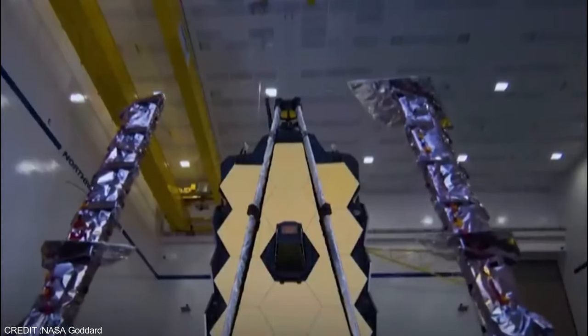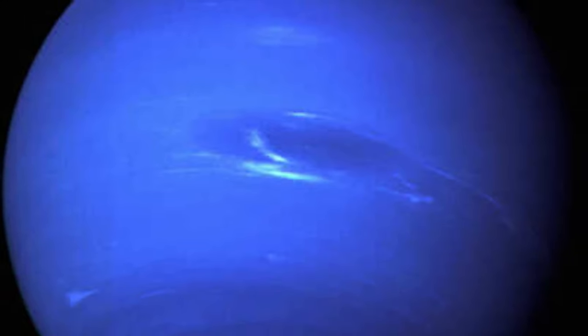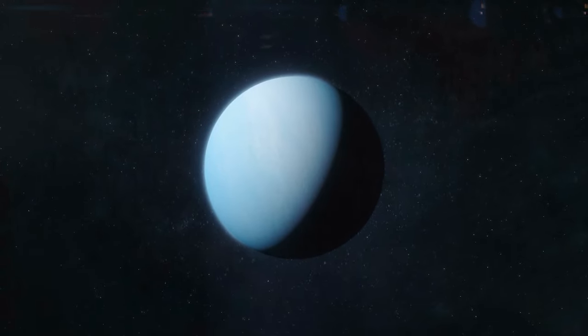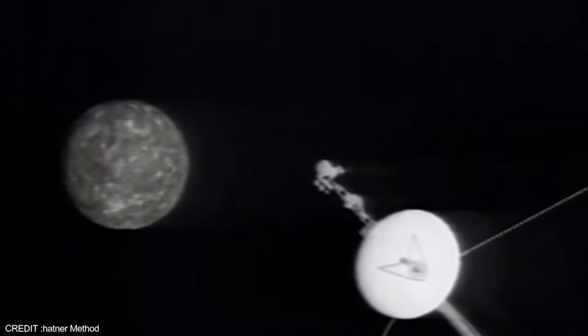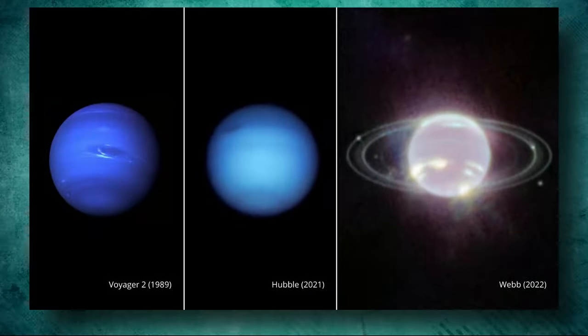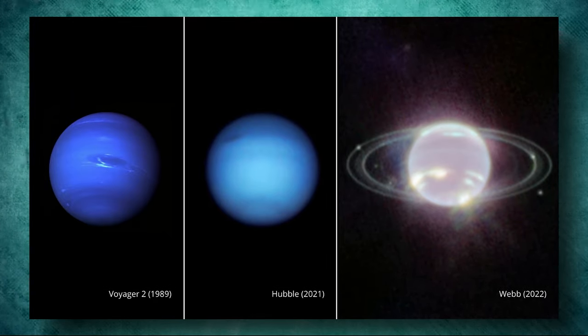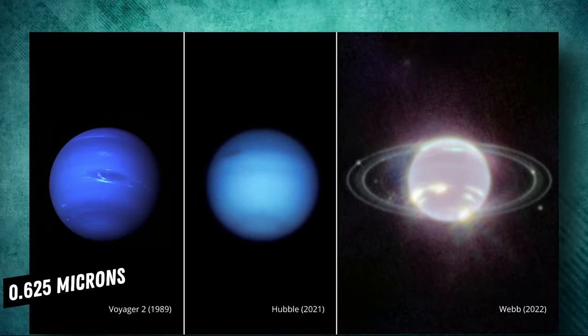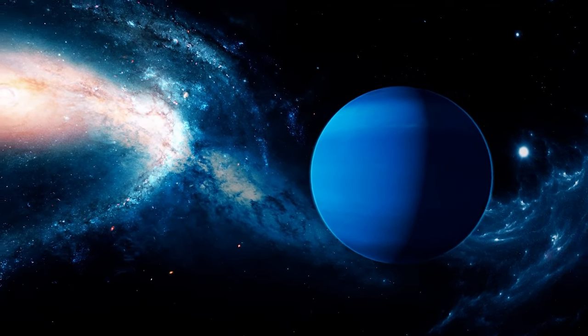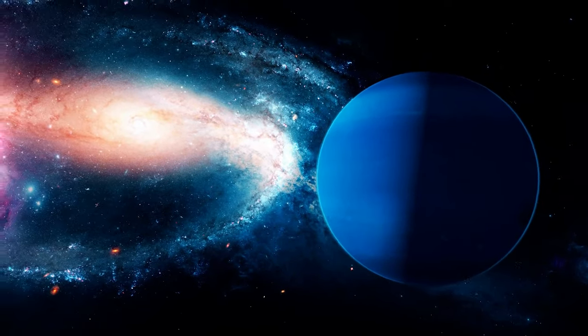JWST's stunning new image of Neptune showcases the planet's intricate rings and delicate dust bands in remarkable detail. This latest view is a far cry from the last time we saw Neptune up close when NASA's Voyager 2 spacecraft captured grainy images of the planet during its flyby in 1989. Using the JWST's near-cam, which captures images in the near-infrared range of 0.625 microns, scientists were able to penetrate Neptune's atmosphere and reveal its subtle features. Methane gas, which gives the planet its iconic blue hue, absorbs red and infrared light, rendering it nearly invisible in the near-infrared spectrum, except for regions with high-altitude clouds.